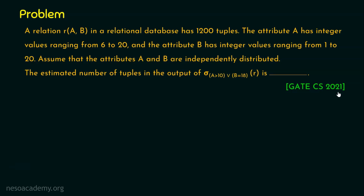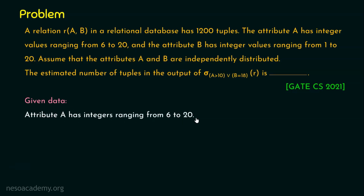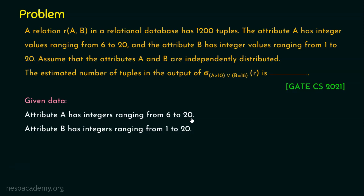Before solving this problem, let's focus on the given data. Attribute A has integer values ranging from 6 to 20 — that is 15 distinct integers. Attribute B has integers ranging from 1 to 20, giving 20 distinct numbers. Our output will contain all rows where attribute A is greater than 10, or B is equal to 18, or both, because this is our condition — either or both should be satisfied.